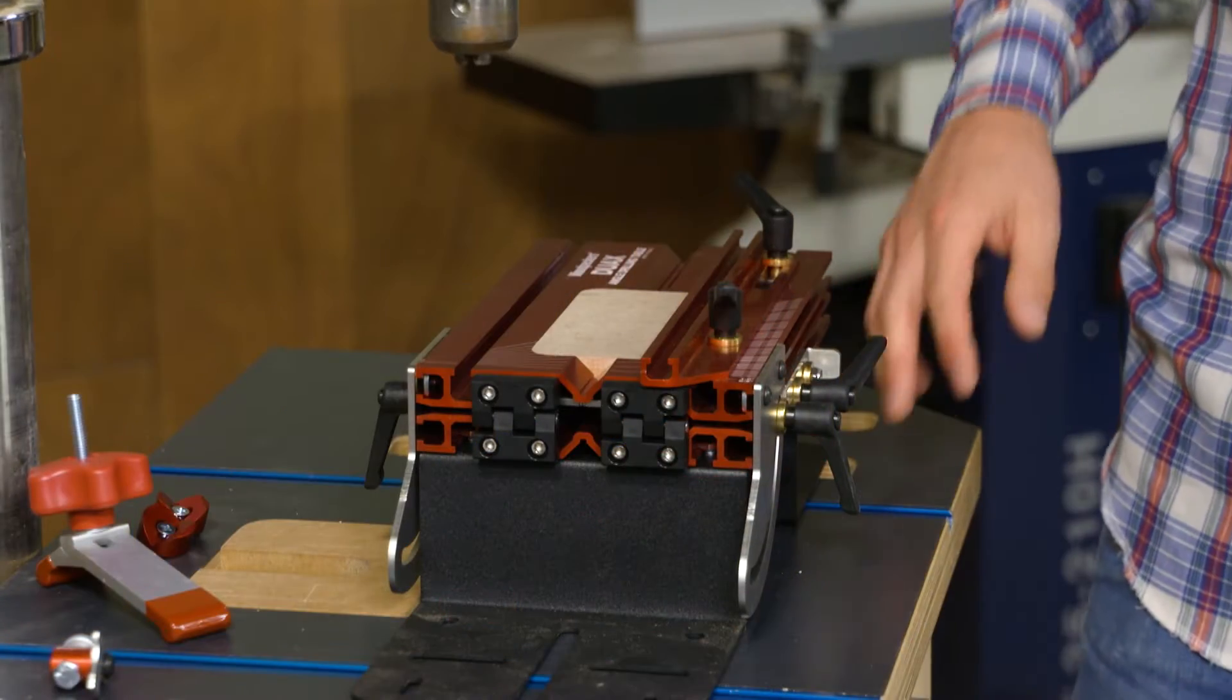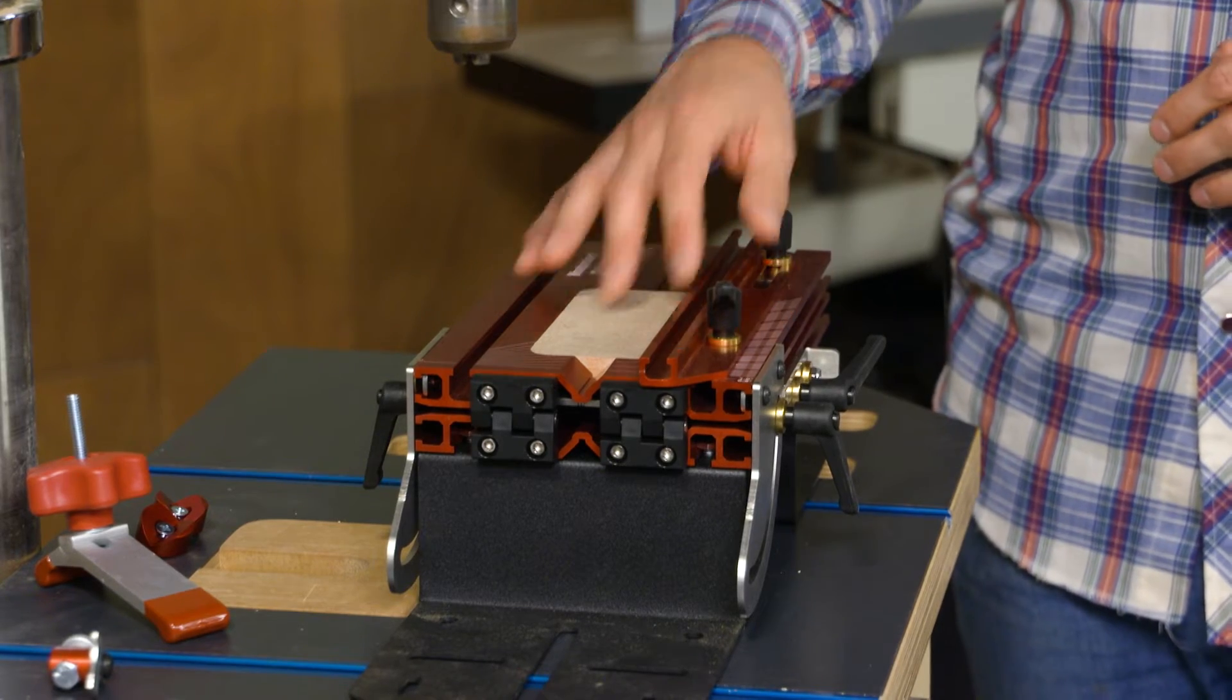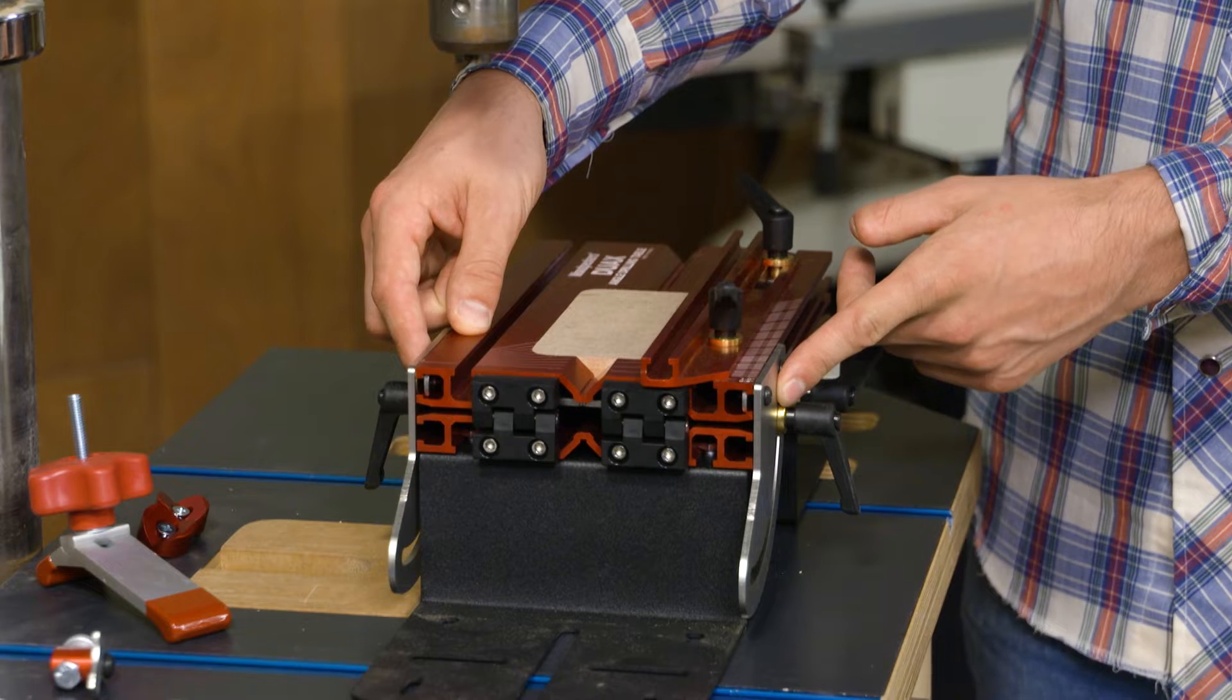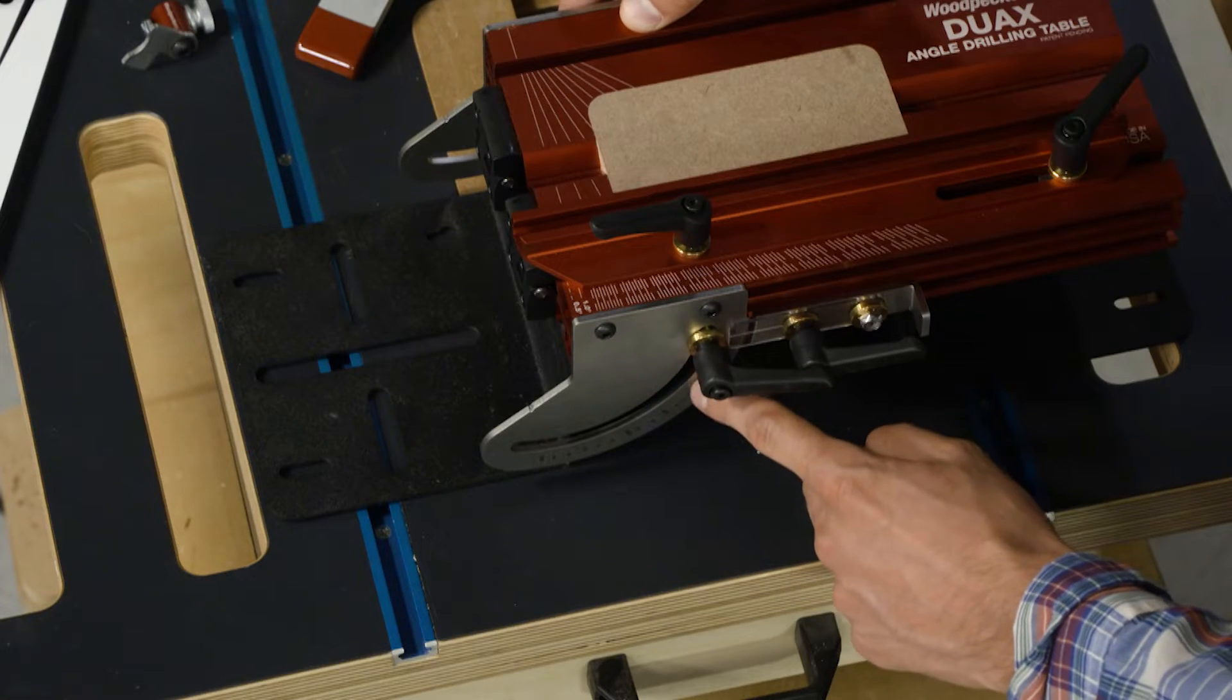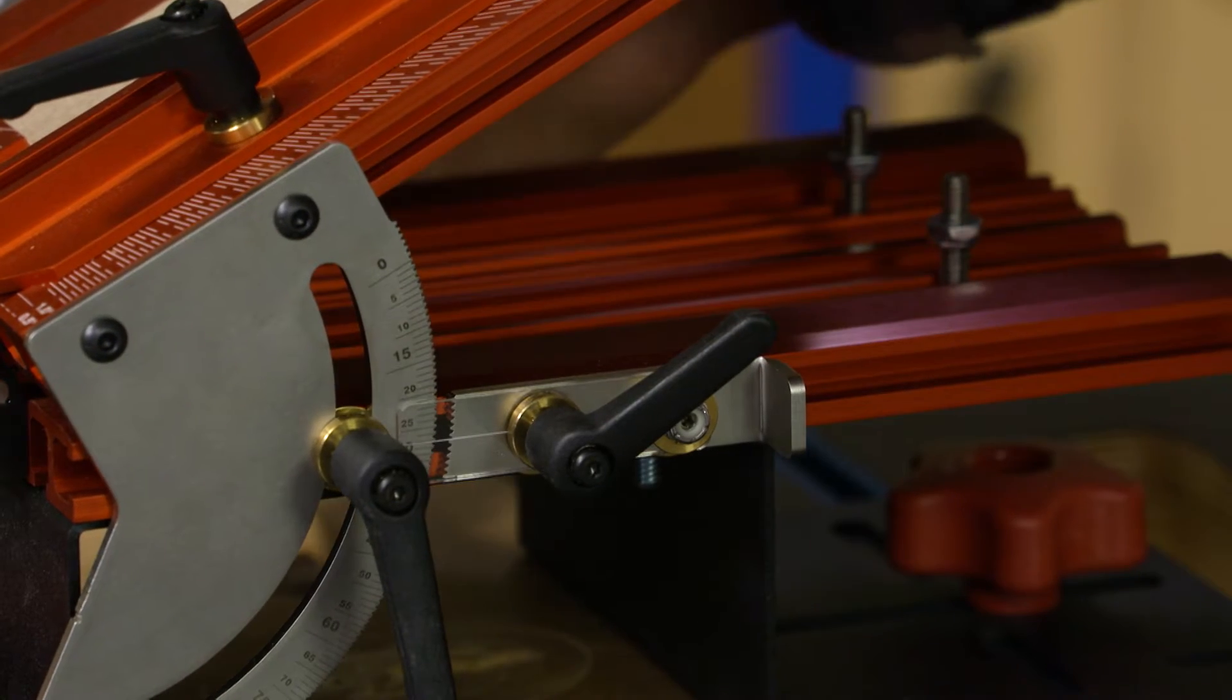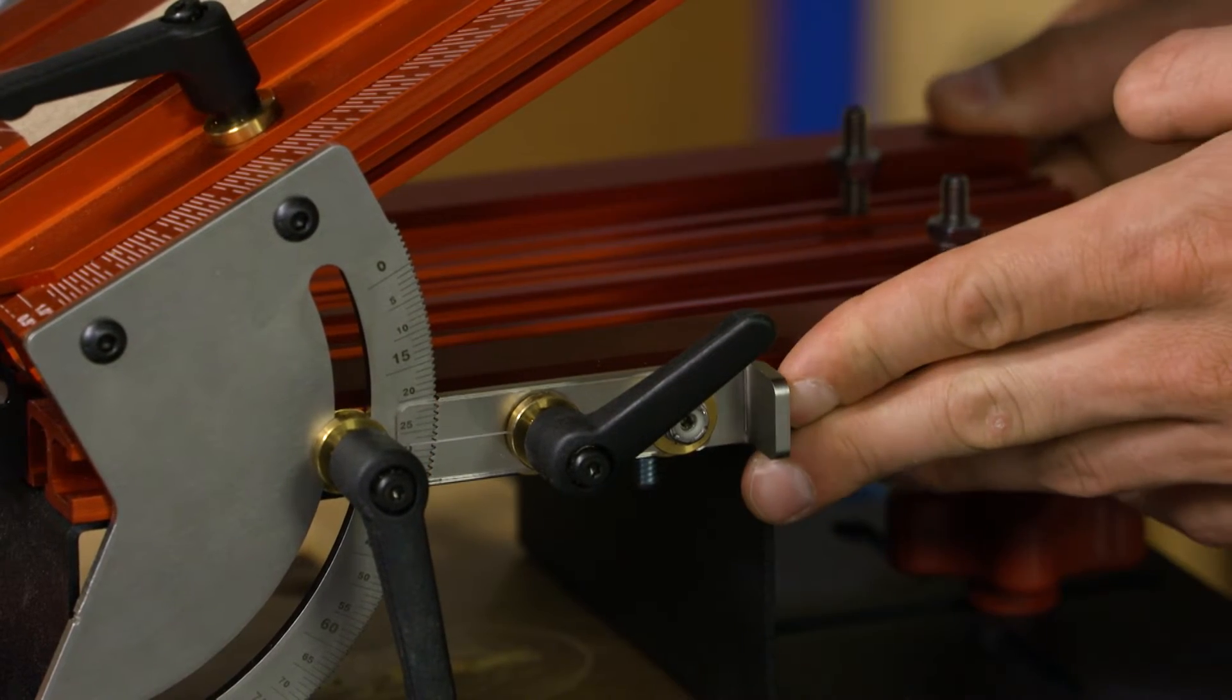As you move your way up from the base plate, you move on to the main drilling table. Now you'll notice on either side there's a stainless steel plate that has a protractor with laser-engraved angle indicators on the side, and you also have a laser-cut tooth that engages the protractor to lock in the positioning.